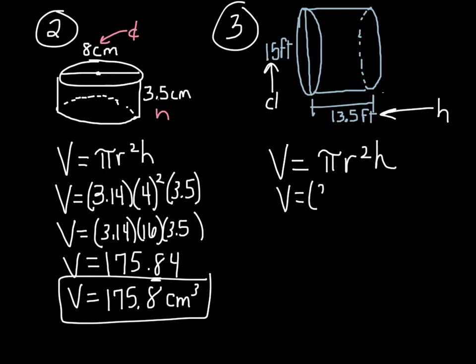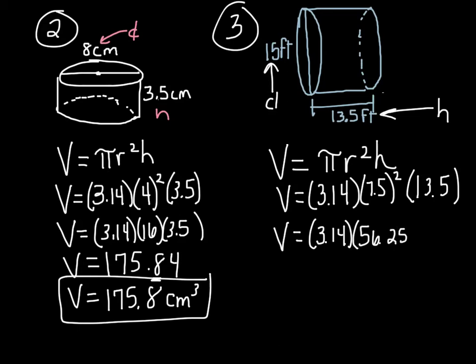V equals 3.14 times radius squared. Well, the radius is half the diameter. Half of 15 is 7.5. So we have to take 7.5 squared times the height, which is 13.5. Now we have to take 7.5 squared. 7.5 squared is 56.25 times 13.5.